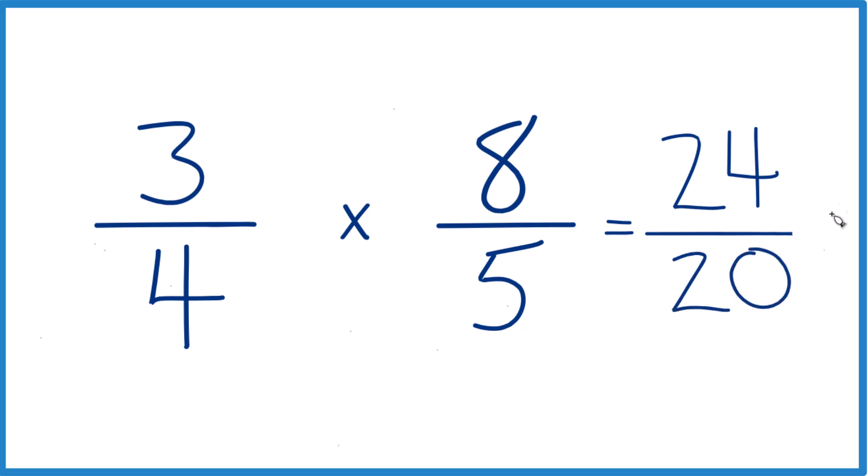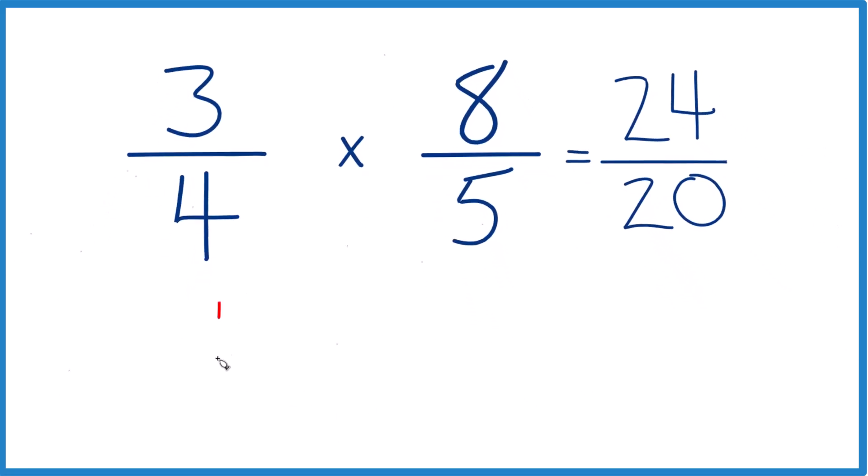And we can simplify that down further. Let's see, they're both even numbers, so let's just divide them both by 2. That gives us 24 divided by 2 is 12, 20 divided by 2 is 10.